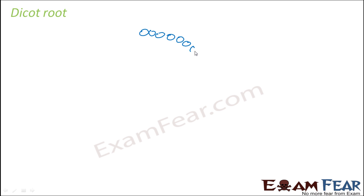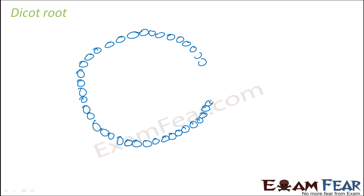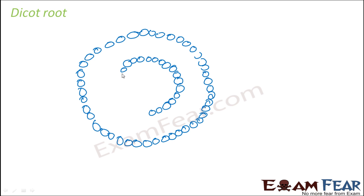Here also you will have one epidermis, the way it was in the case of a monocot root. Similarly, you will have one endodermis. The epidermis, endodermis, and the parenchyma cells between epidermis and endodermis — all those things remain the same. What will change is the vascular tissue arrangement — the way xylem and phloem are arranged will differ.